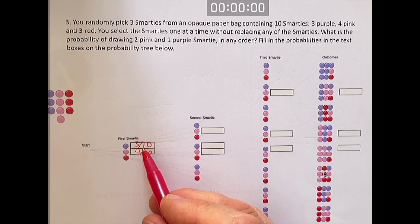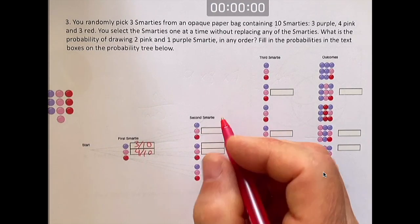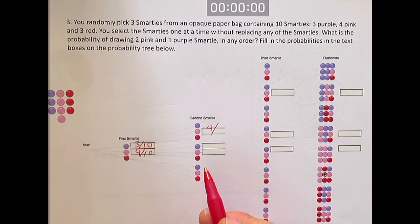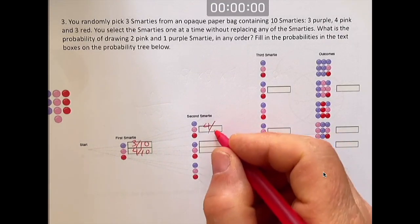If you took out a purple, how many pink Smarties do you have? Well, you still have four pink Smarties, but you took the purple out so you don't have 10 Smarties anymore. Now you got nine, four out of nine.